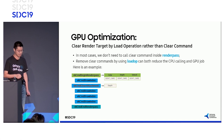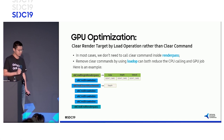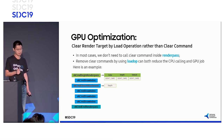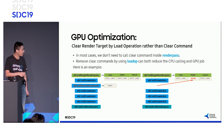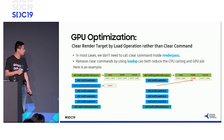Now let's look at the clear operation. By using the clear load operation, we don't need to call a separate clear command if the render target will not be changed inside the render pass. In this example, by using the clear operation, we can remove the explicit clear command for depth. This can reduce both CPU calls and GPU work.